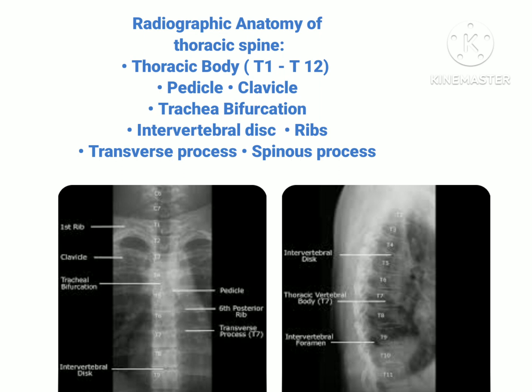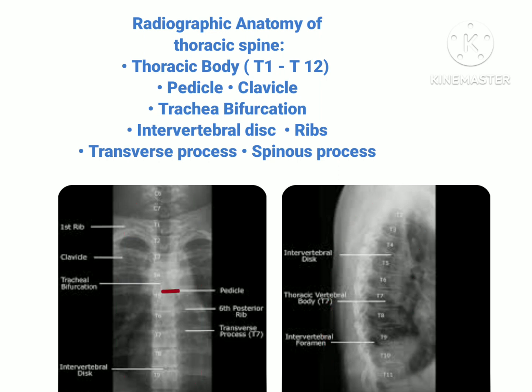Now the radiographic anatomy of thoracic spine — the anatomy that we will see in X-rays of the thoracic spine. First part is the thoracic body, so T1 to T12 thoracic body is visible as you can check in the image. Next is the pedicle — the part of the vertebra that connects the transverse process to the body. Next is the clavicle, that's the collar bone. Next is tracheal bifurcation — the point where the trachea divides into two main bronchi, and this is at the level of the 4th or 5th thoracic vertebra.